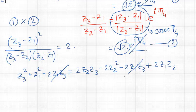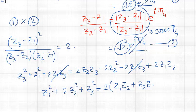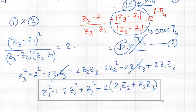So we can write the final condition as: Z1² + 2Z2² + Z3² = 2(Z1Z2 + Z2Z3). This is the condition for a right-angled isosceles triangle with vertices Z1, Z2, Z3 and right angle at Z2. Thanks a lot, bye-bye.